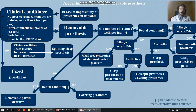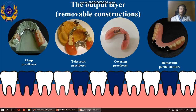On this slide, you can see the algorithm for choosing a removable structure that drives the correct operation of the neural network. The output layer consisted of removable and non-removable options for orthopedic rehabilitation, the choice of which was based on the pre-developed algorithm grounded in basic clinical conditions.